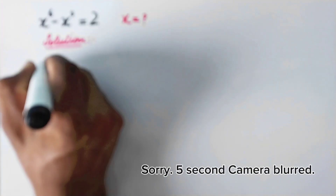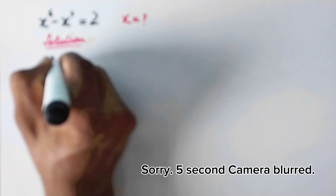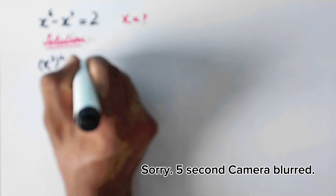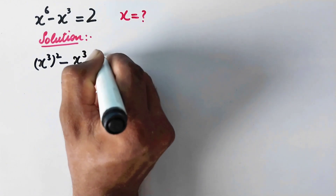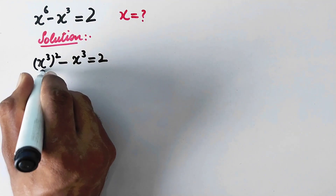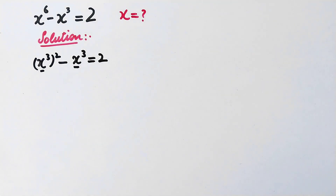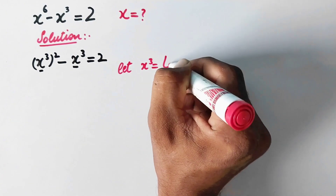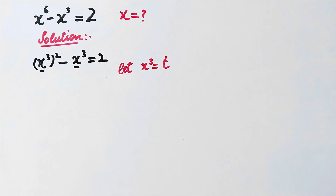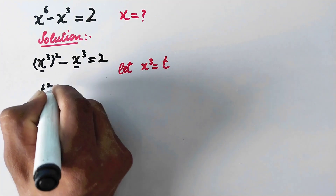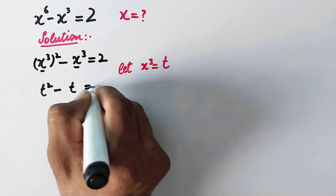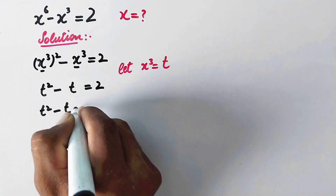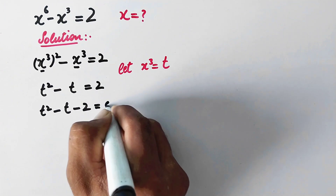In the first step we can write x raised to the power 3, squared, minus x raised to the power 3 is equal to 2. We can see that both terms share the same base, so we let x raised to the power 3 equal to t. Our equation then becomes t squared minus t equals 2, or t squared minus t minus 2 equals 0.